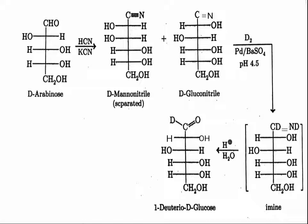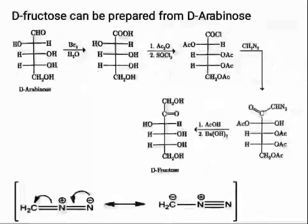Then you can get the two extended products. If you add D₂ (deuterium) instead of H₂, then the CHO will become CDO, and in the final product the aldehyde carbon will carry deuterium — CDO instead of CHO — ultimately giving deuterium-labeled D-glucose.